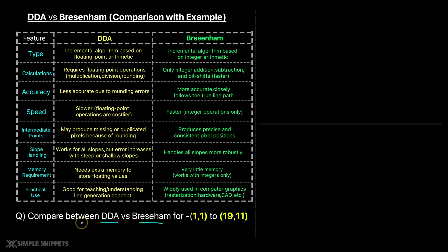The first point is the type — both algorithms are incremental algorithms. DDA is based on floating point arithmetic, whereas Bresenham is based on integer arithmetic. Coming to calculations, DDA requires floating point calculations — multiplication, division, and rounding off — but in Bresenham only simple integer calculations are required: addition, subtraction, and bit shift.